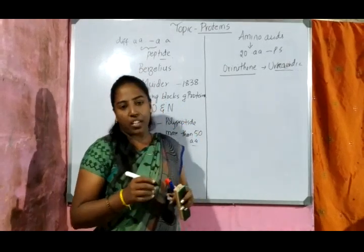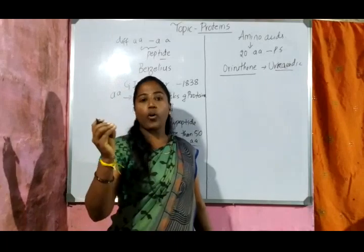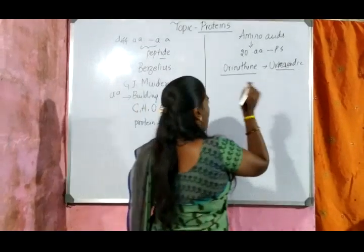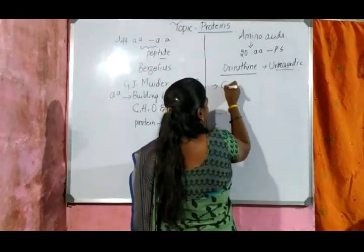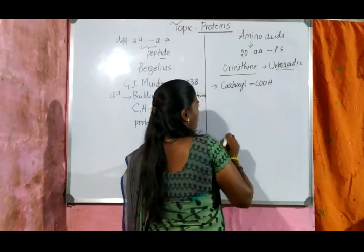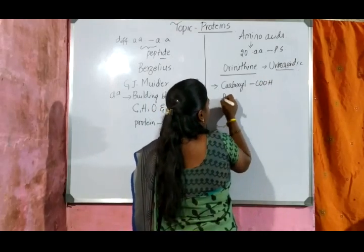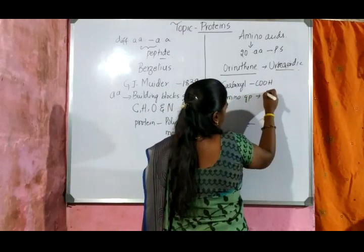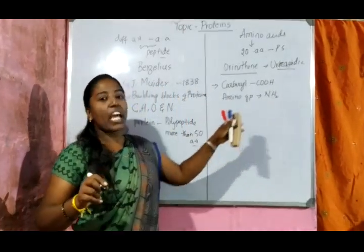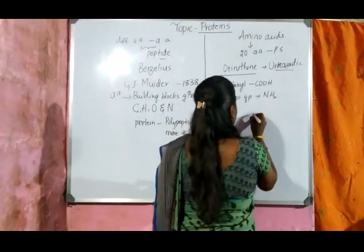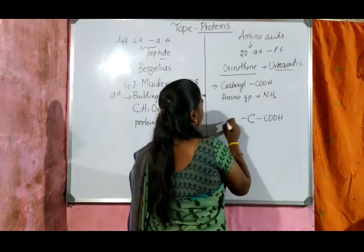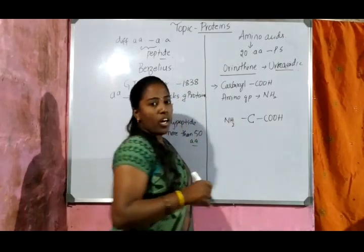When you consider an amino acid, it consists of one carboxyl group (COOH) and one amino group (NH2) as the functional groups. Each amino acid consists of a carboxyl group as well as an amino group.